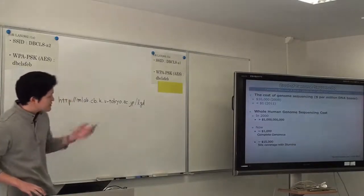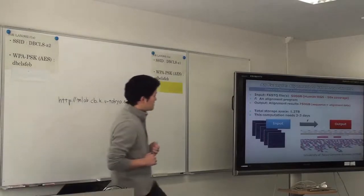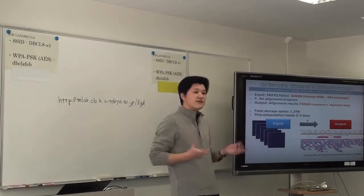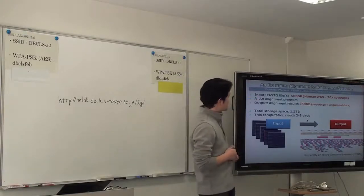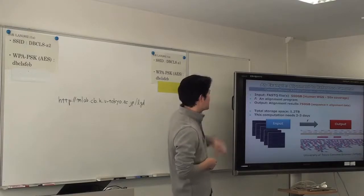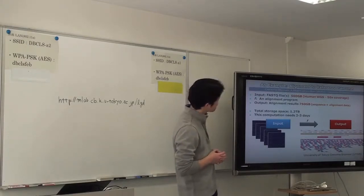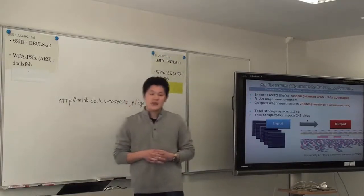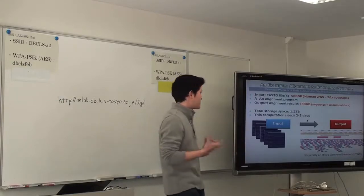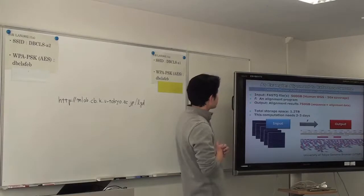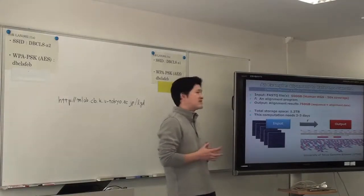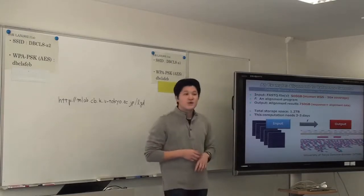The target input for 50x-covered human genome sequences, from my experience, is now about 500 gigabytes of text data. The alignment program output will be around 750 gigabytes, containing read sequences and alignment data such as start positions. The working intermediate data requires 1.2 terabytes of storage.